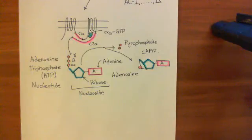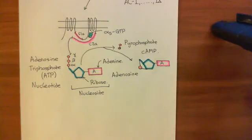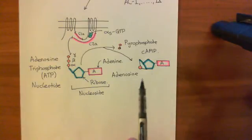Welcome to this next video in which we are discussing receptor desensitization, where we're specifically looking at the desensitization of the beta-2 adrenergic receptor. We're now going to discuss what the cyclic AMP does.